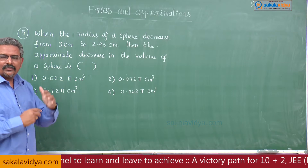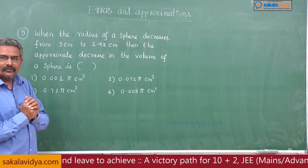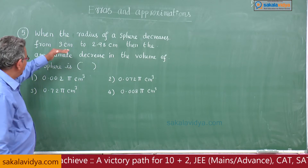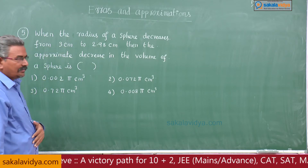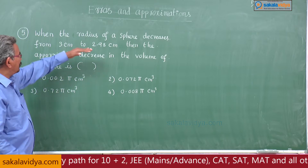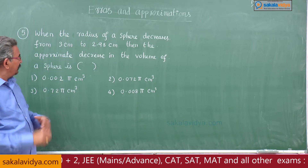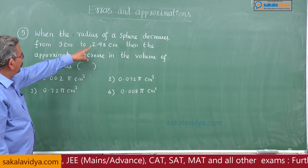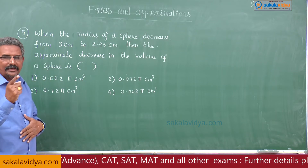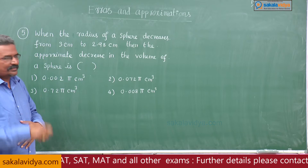First let us analyze the problem. Initial radius of the sphere is 3 centimeters, final radius of the sphere is 2.98 centimeters. Now, the error is 2.98 minus 3 centimeters, which is negative — meaning it decreases.